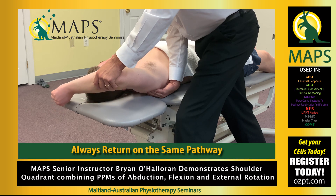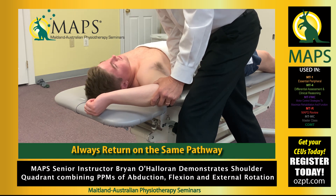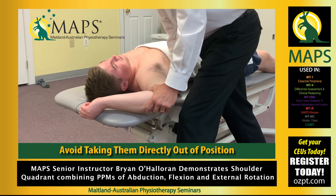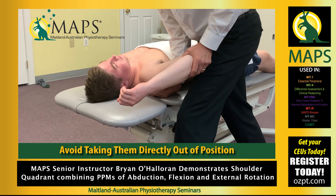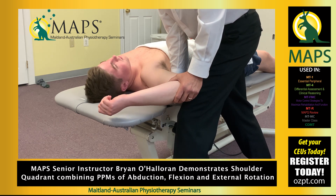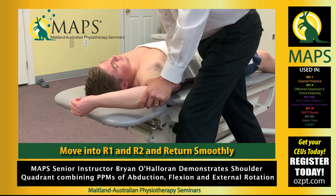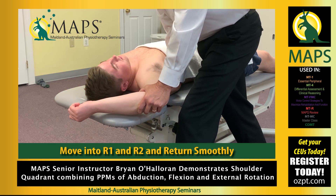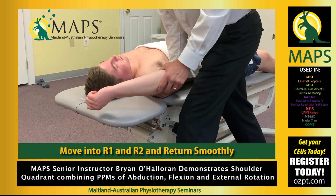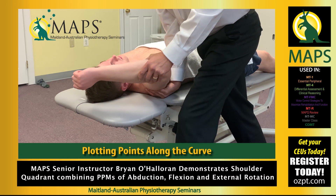On the return, always return via the same pathway that you entered. You really do want to avoid carefully moving into resistance, getting to R2, and then just pulling them out of it. You're going to find some circumstances where there will be an odious response to that. Our interest is in moving into R1 through to either P1 or R2, and then returning at the same rate and in the same manner that you entered. It is effectively plotting points along the curve.